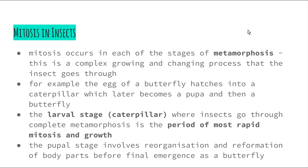Looking at insects, mitosis occurs in each of the stages of metamorphosis — the complex growing and changing process that some insects go through. The butterfly is the best example we can visualize. A butterfly starts off as an egg, hatches into a caterpillar, the caterpillar then becomes the pupa and wraps itself up, and then emerges from the chrysalis as a butterfly — completely different to the initial organism that came out of the egg.